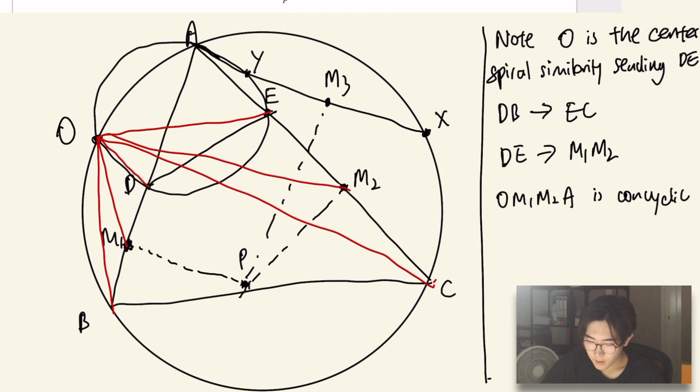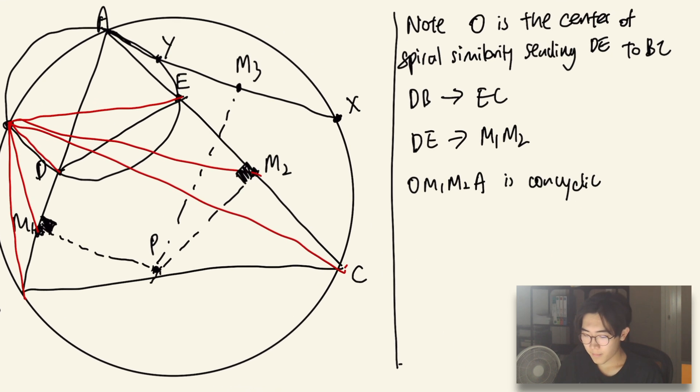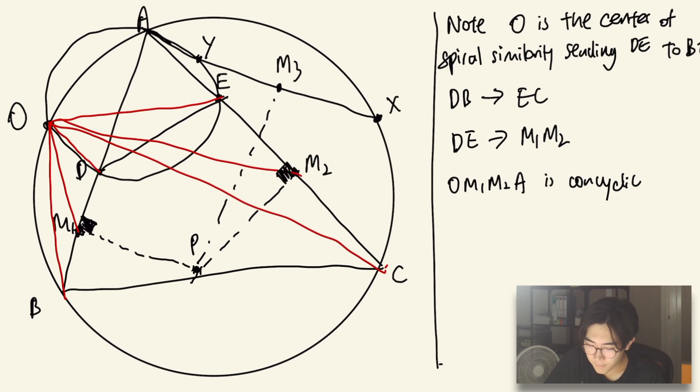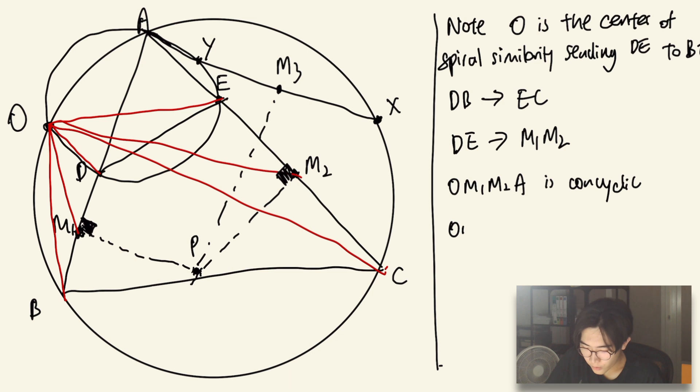But at the same time, we notice that since P is the midpoint of BD and EC, the angle AM1P is 90 degrees. And similarly, the angle AM2P is 90 degrees. So we have that AM1PM2 is also cyclic, which means that the five points O, M1, P, M2, A is cyclic.